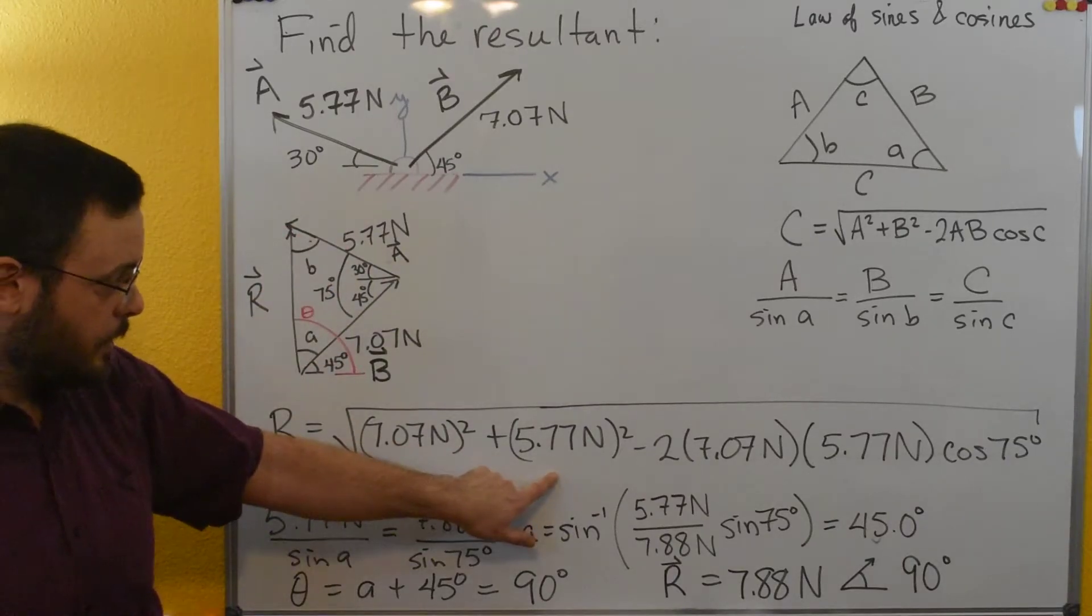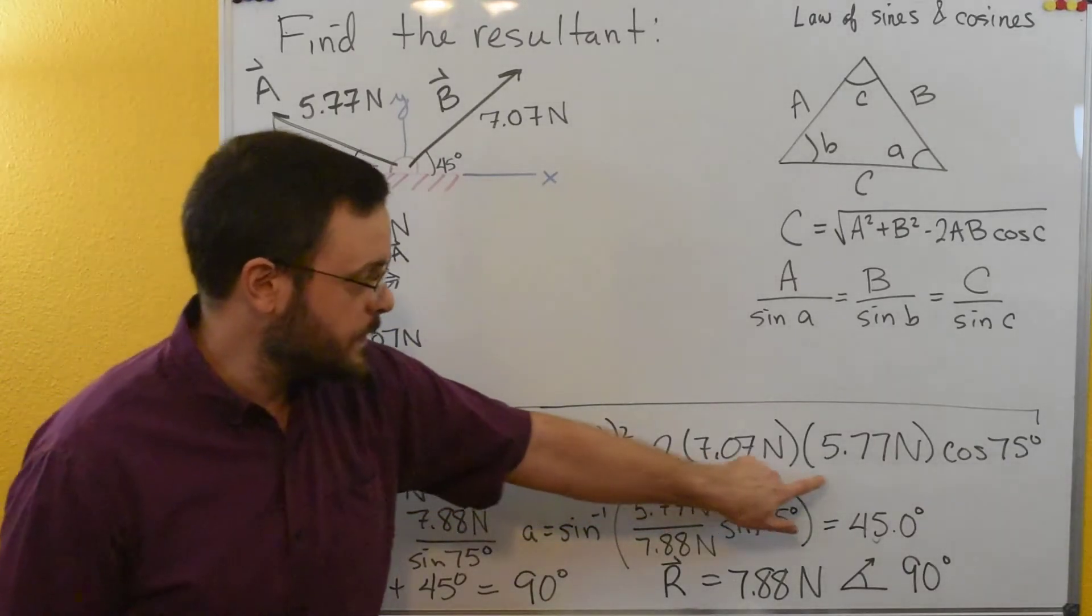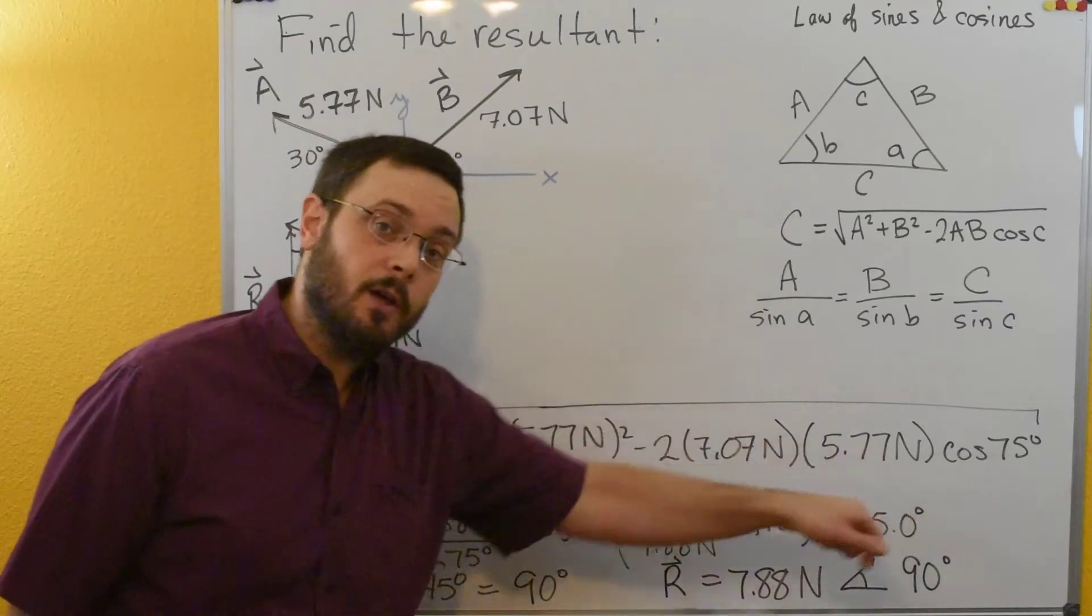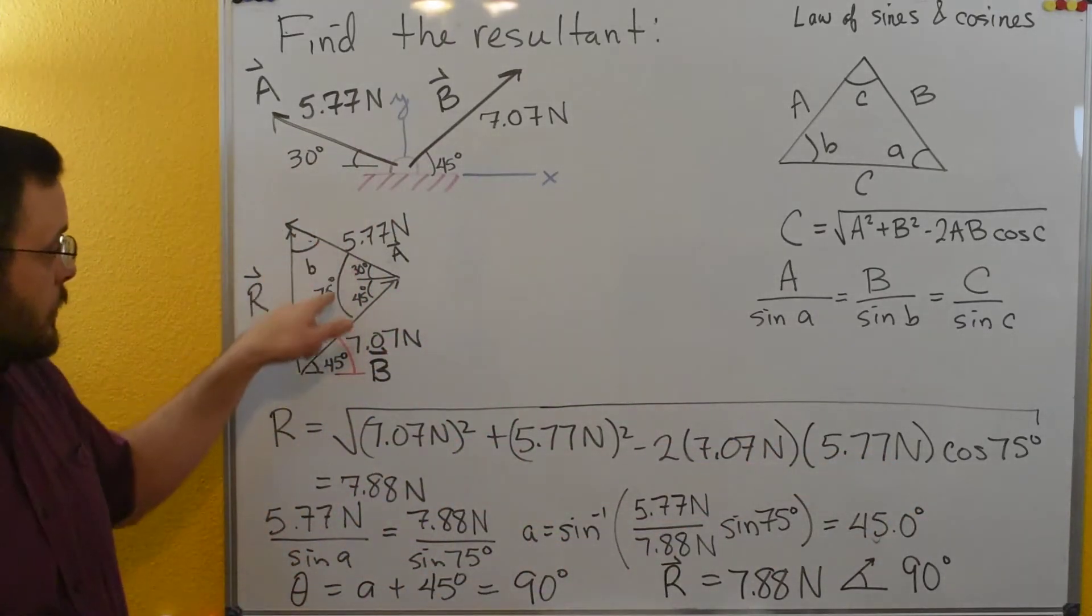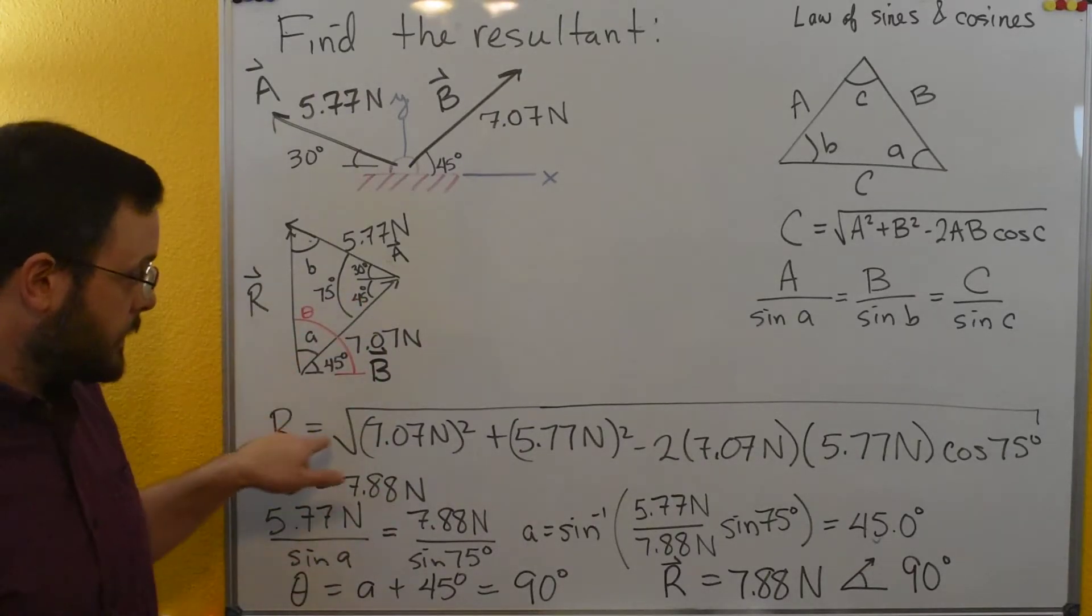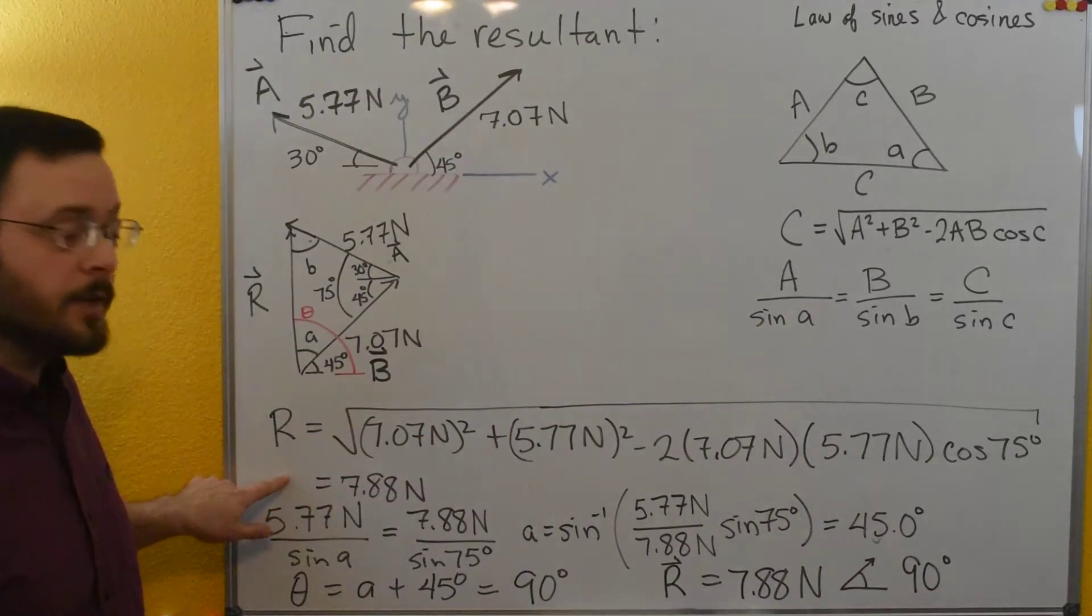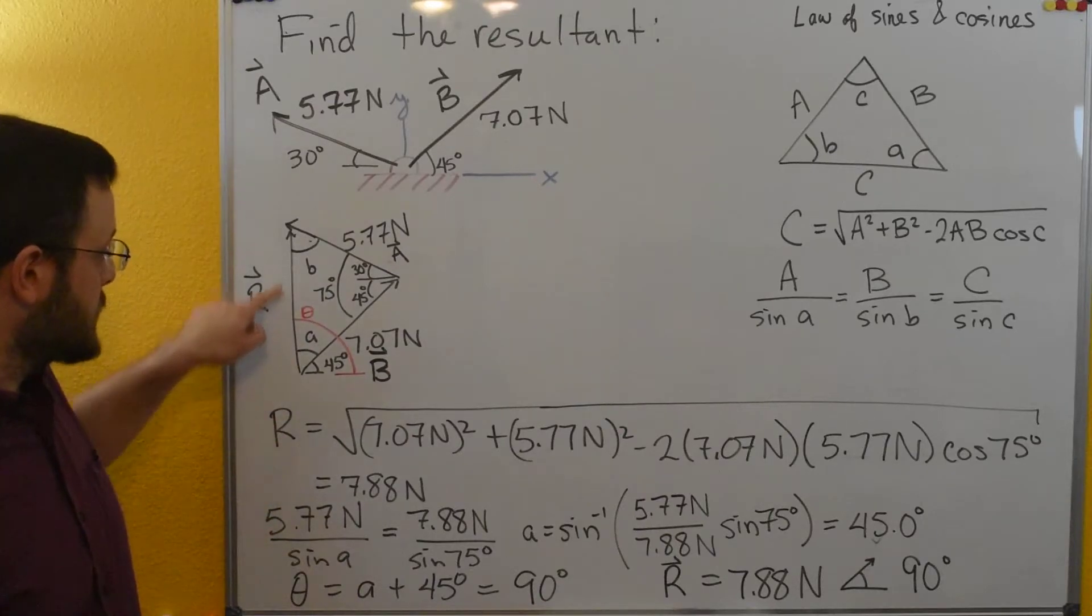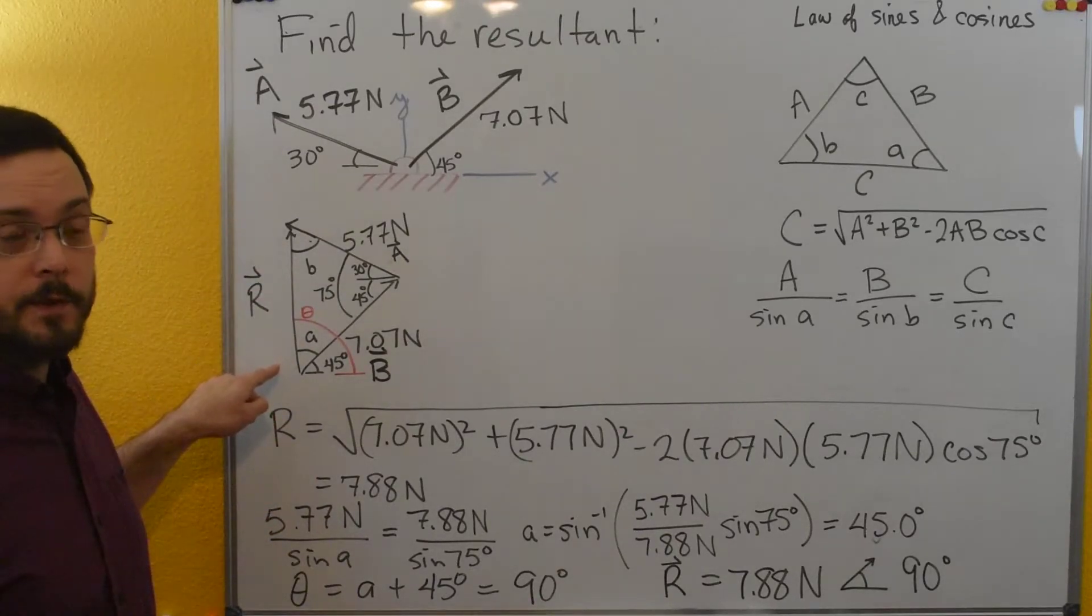So I get these two terms squared minus two times these two terms again times the cosine of this angle here opposite side r which is my 75 degrees. I take a square root of that and I get 7.88 newtons. That's the magnitude of the resultant vector.